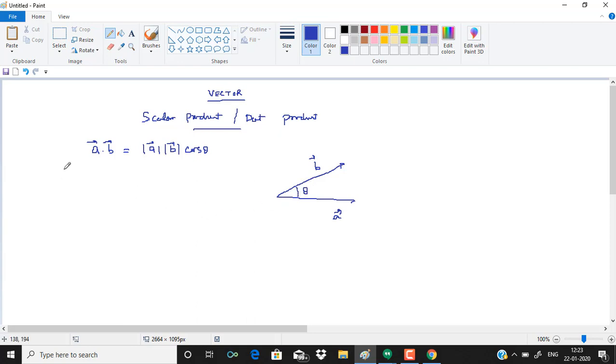So here we can write cos theta. It will be a dot b upon magnitude of a, magnitude of b. Now a vector, what is there? Let me suppose that a vector can be written as a1 i plus a2 j plus a3 k.